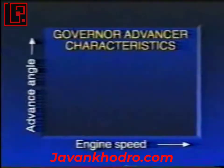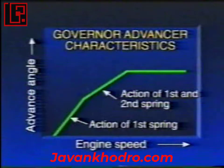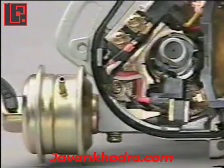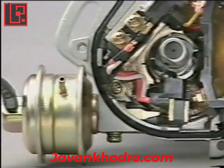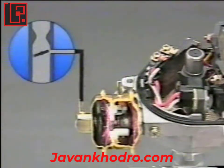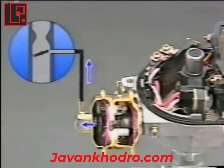This graph shows the relationship between the degree of the advance angle and the engine speed. Next, let's take a look at a vacuum advancer. Here, a diaphragm is connected to the pickup coil with an advancer rod. This diaphragm responds to the vacuum in the intake manifold. When the load on the engine is light, the throttle valve opening is also small, so a vacuum is generated at the diaphragm, pulling the advancer rod, moving the signal rotor to the left, and advancing ignition timing.